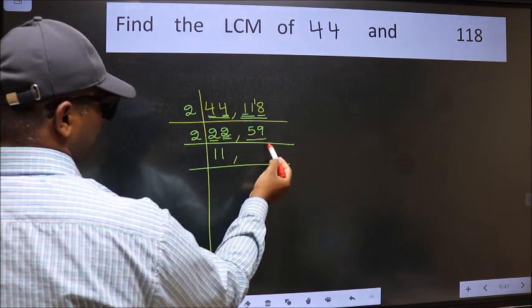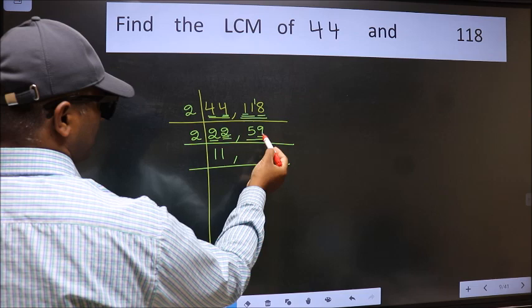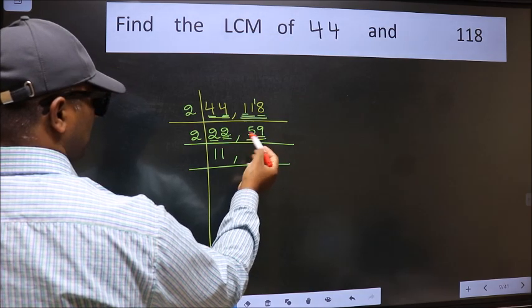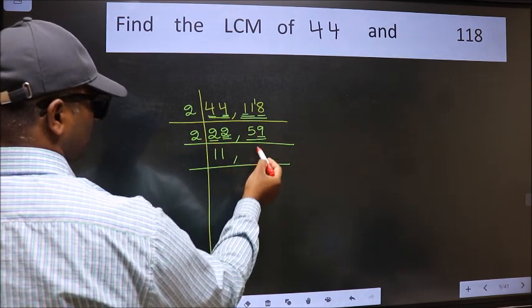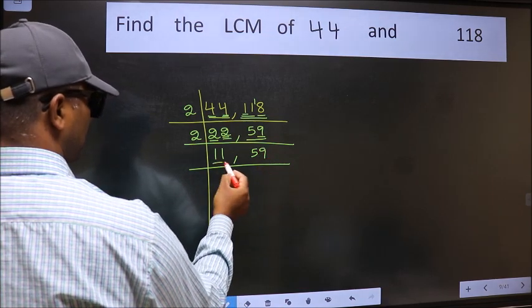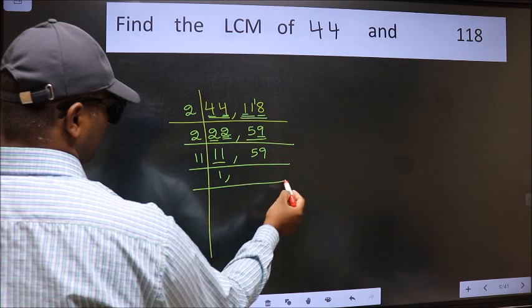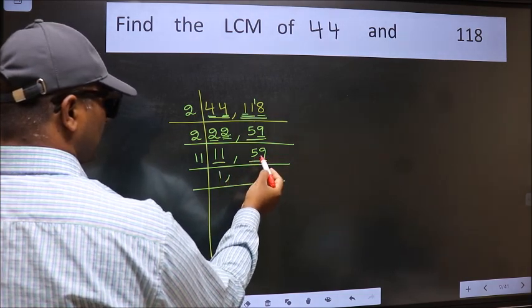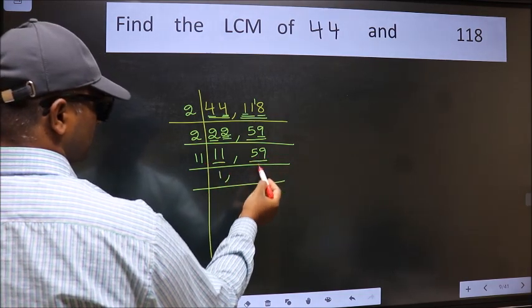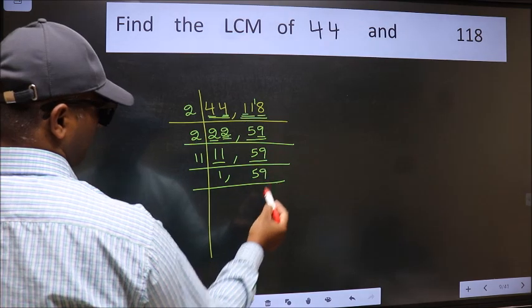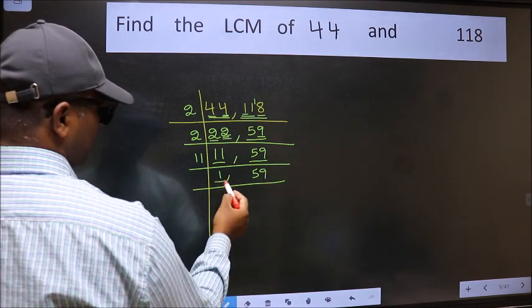The other number, 59, has last digit 9, which is not even, so this number is not divisible by 2. Write it down as it is. Now we have 11. 11 is a prime number, so 11 times 1 is 11. The other number, 59, is not divisible by 11, so write it down as it is. Now we got 1 here, so focus on the next number.